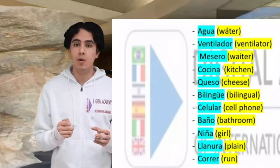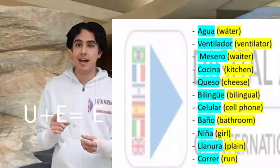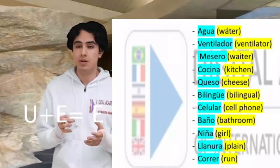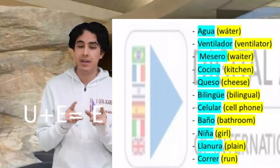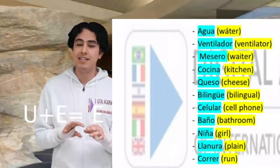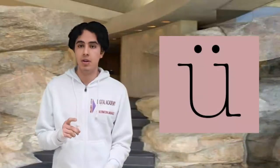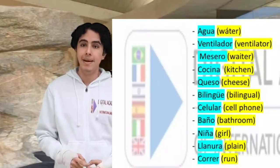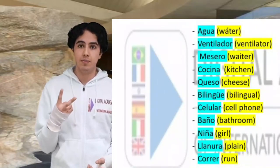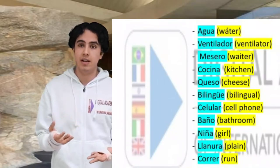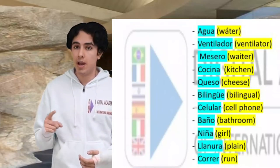Here in the word queso, we see a U with an E that sounds like E — queso. When you see this combination, the U with E always sounds like E. The exception is if the word has two points over the U, a diaeresis. For example, in the word bilingüe, you have two points over the U, which is why it sounds bilingüe.